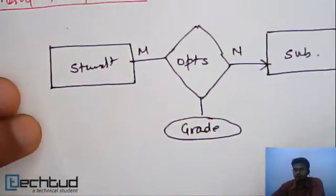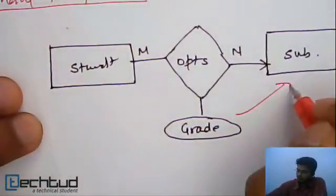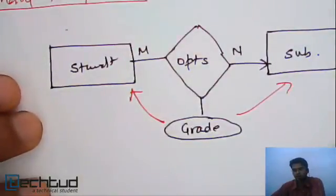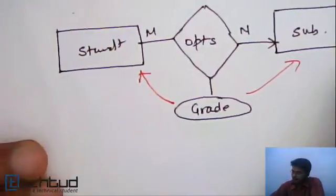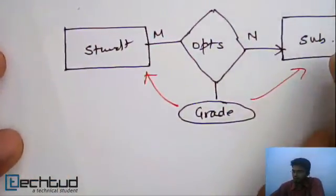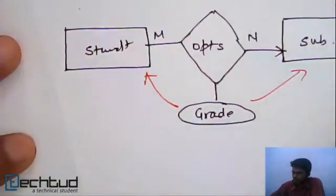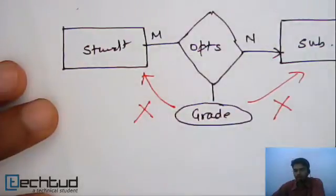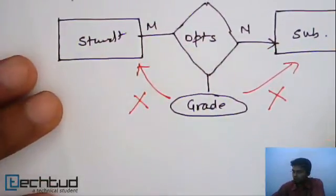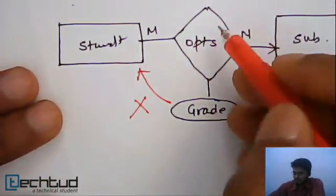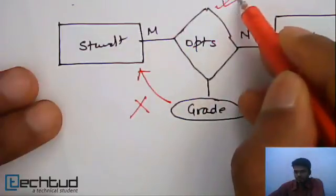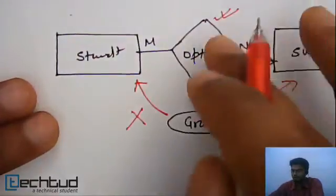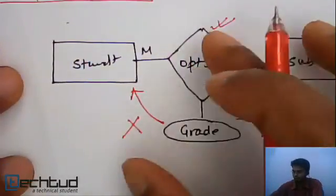So now which side will we move this attribute? How do we deal with this in our entity relationship model? We cannot move this to any of the sides. In this case, we need to keep a separate table for this. We cannot move this to any side, so we will have to take a separate table to store the relationship.